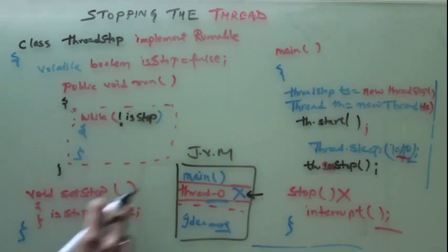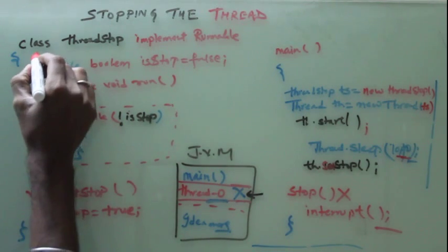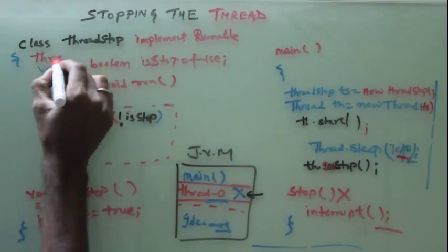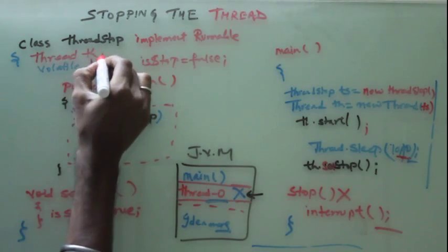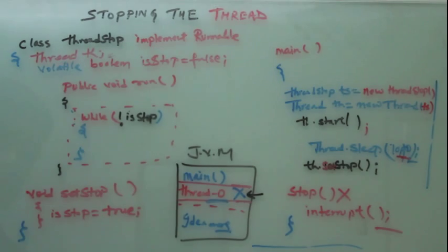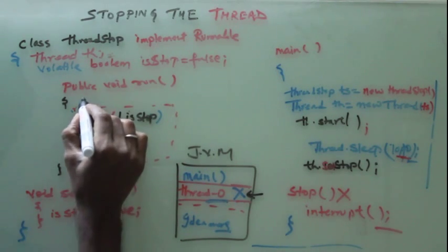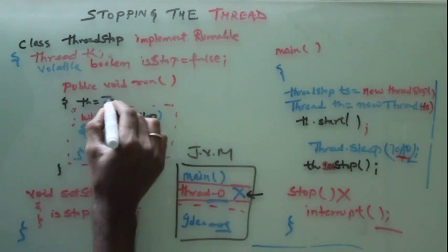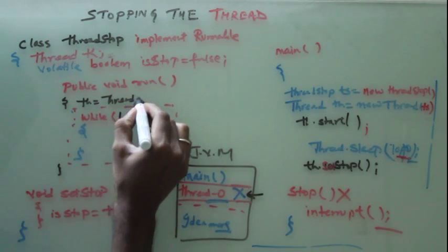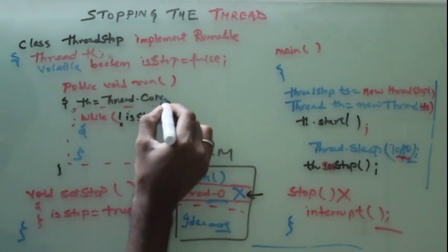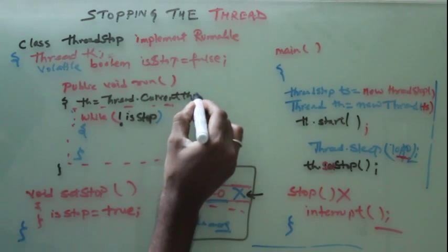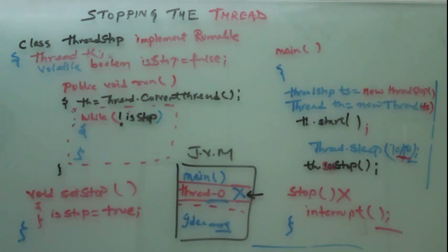So for this purpose, we should know what is the current thread is running. So we have to take care of another variable, thread th. And when it comes to run method, we should know what is th. Thread.currentThread.